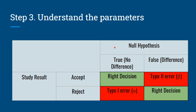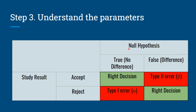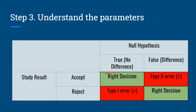In the third step, we need to understand the parameters involved in calculation of sample size. We need to be clear about the types of errors. We have two types: type 1 or alpha error, and type 2 or beta error. The null hypothesis, which says there is no significant difference, may be true or false. If we correctly accept a true null hypothesis, that is the right decision. If we correctly reject a false null hypothesis, that is also a right decision. If we falsely reject a true null hypothesis, that is called type 1 or alpha error.